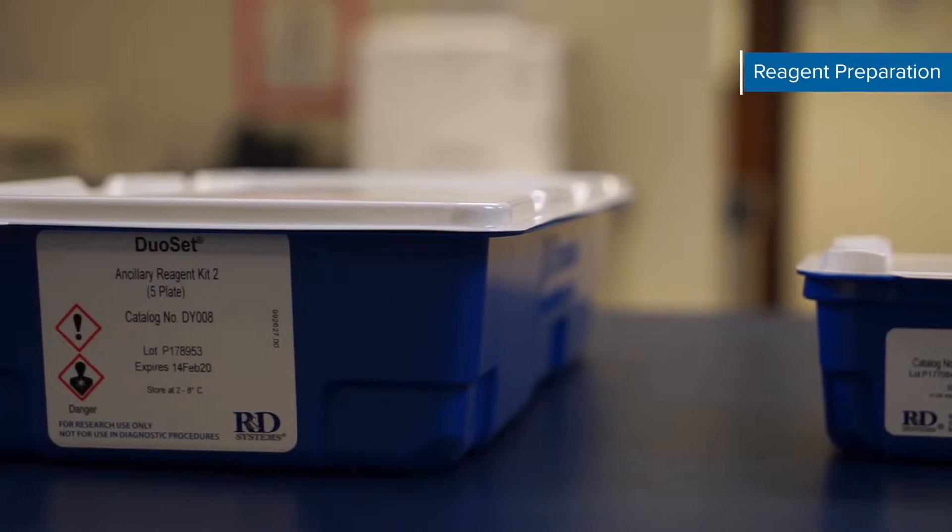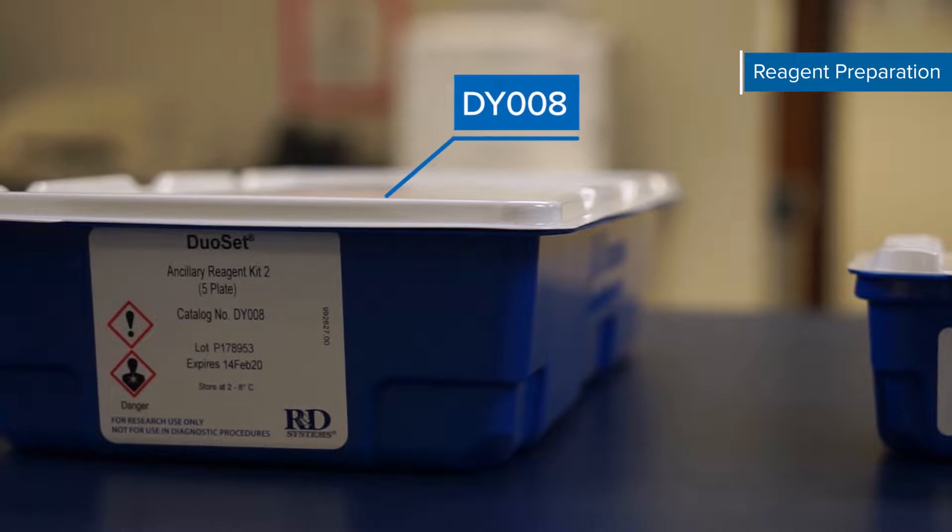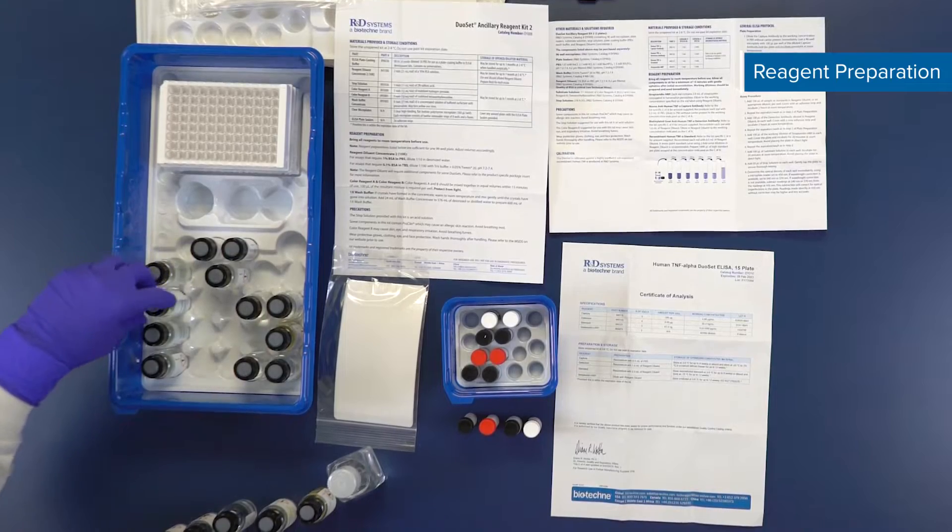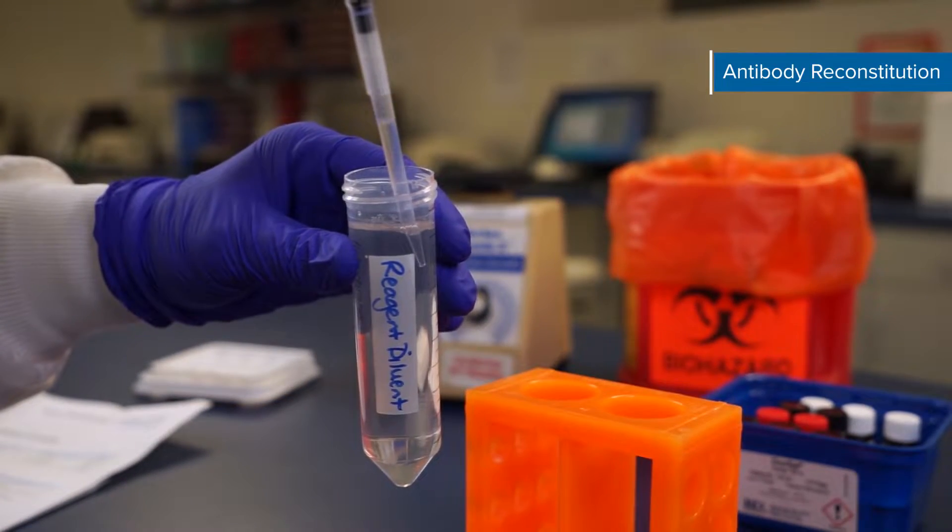For this assay video we will be using the recommended Duoset Ancillary Reagent Kit 2, catalog number DY008. This kit provides enough components to run five 96-well assay plates.